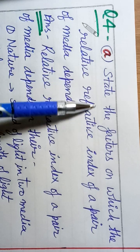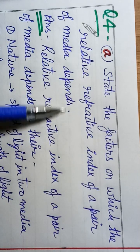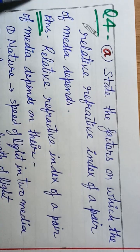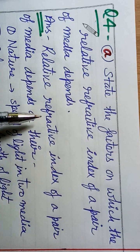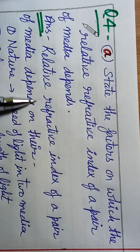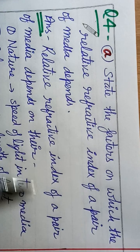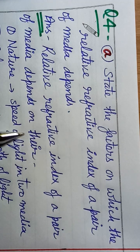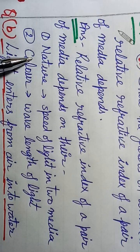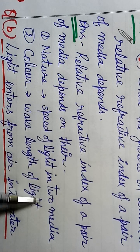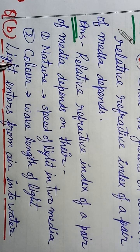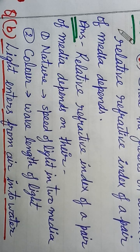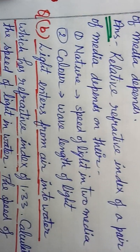Q4: State the factors on which the relative refractive index of a pair of media depends. The refractive index of a pair of media depends on the nature and speed of light in the media, and also on the colour (wavelength) of light.